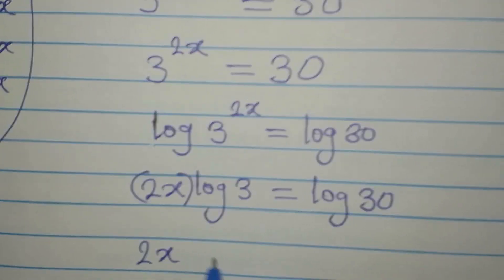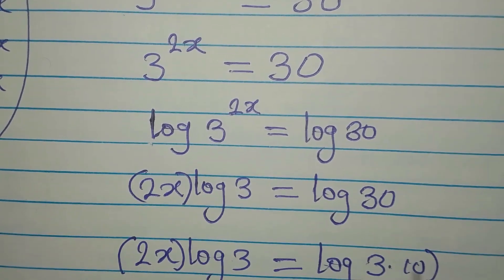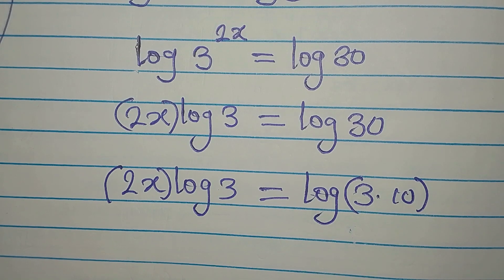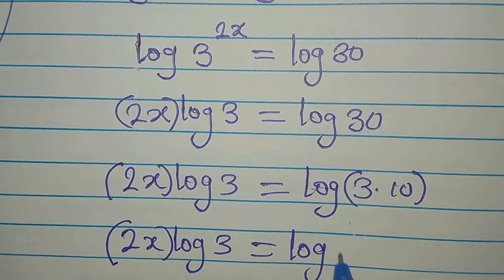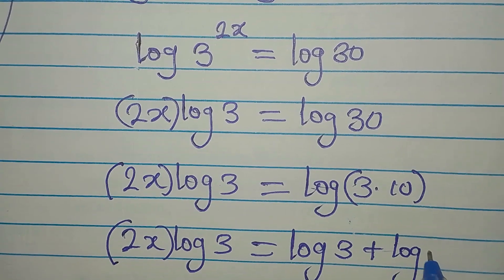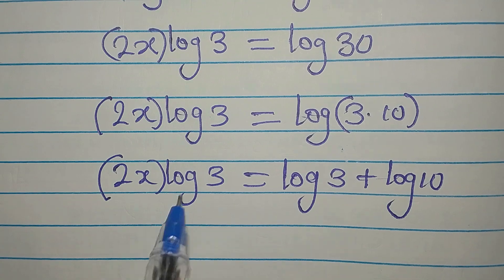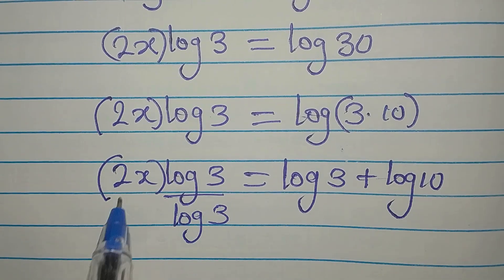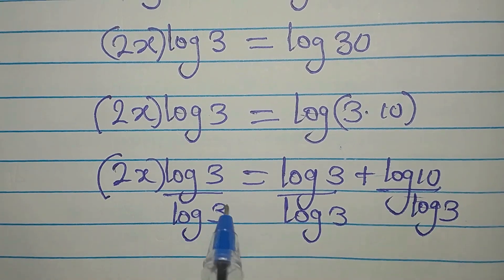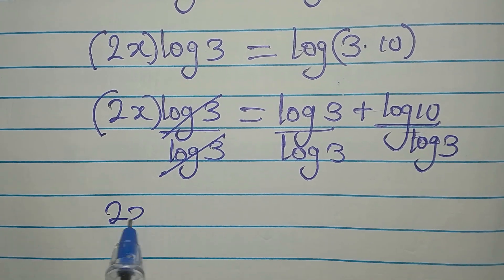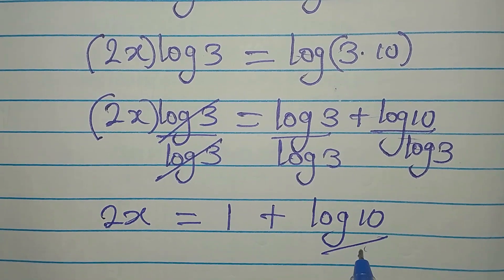So 2x log 3 is equal to log 30, because 3 times 10 gives us 30. We can apply one of the laws of logarithm and get log 3 plus log 10, which is the same as log 30. Now we divide both sides by log 3, so that 2x will be alone. This gives us 2x equal to log 3 divided by log 3, which is 1, plus log 10 divided by log 3.